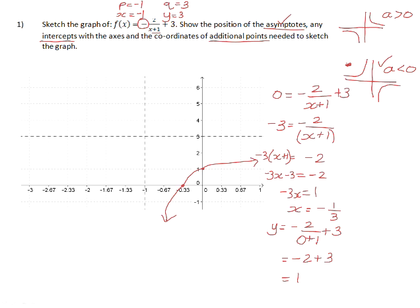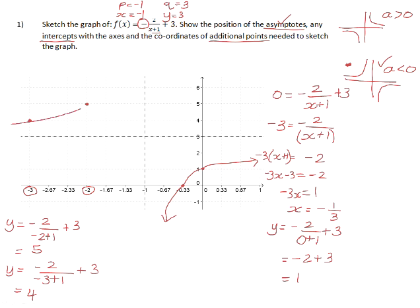We now need to sketch the other side of the graph — the part that lies to the left of the vertical asymptote and above the horizontal asymptote. We calculate some additional points by substituting x = -2 and x = -3 into the equation. Substituting x = -2 gives y = 5, and substituting x = -3 gives y = 4. So we have points at (-2, 5) and (-3, 4), and we can now sketch the other branch of the hyperbola.